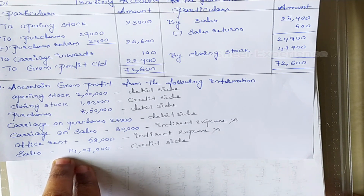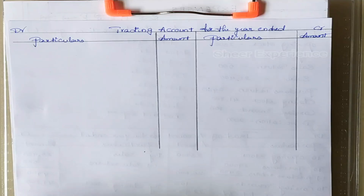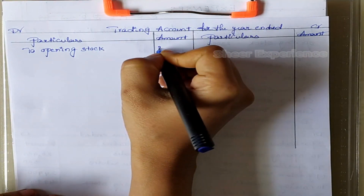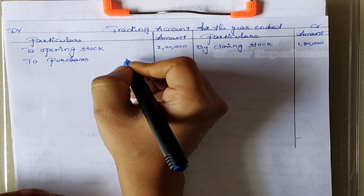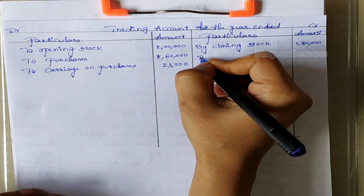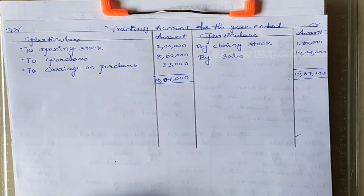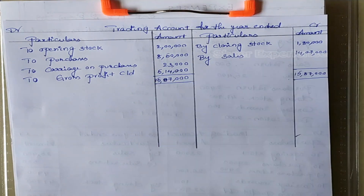Carriage on purchases is a direct expense and we will mention it on the debit side of the trading account. Carriage on sales is an indirect expense — this will not be considered for the trading account, and all indirect expenses go to the profit and loss account. Office rent is also an indirect expense and will go to the profit and loss account. Gross profit is 5,14,000.